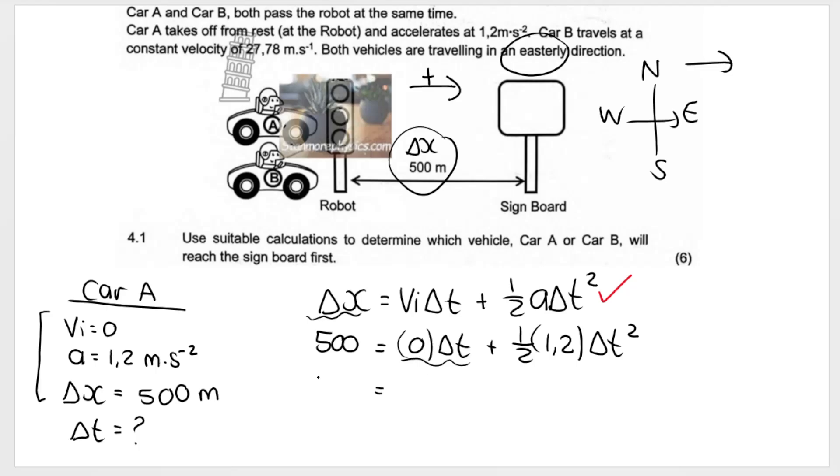How we solve for this is zero times multiplied by time, that goes to zero. So we've got 500 on this side. On this side, we've got half of 1.2, which is 0.6, multiplied by Δt squared. Our next step, this is multiplied by 0.6. We take it over, it becomes divide.